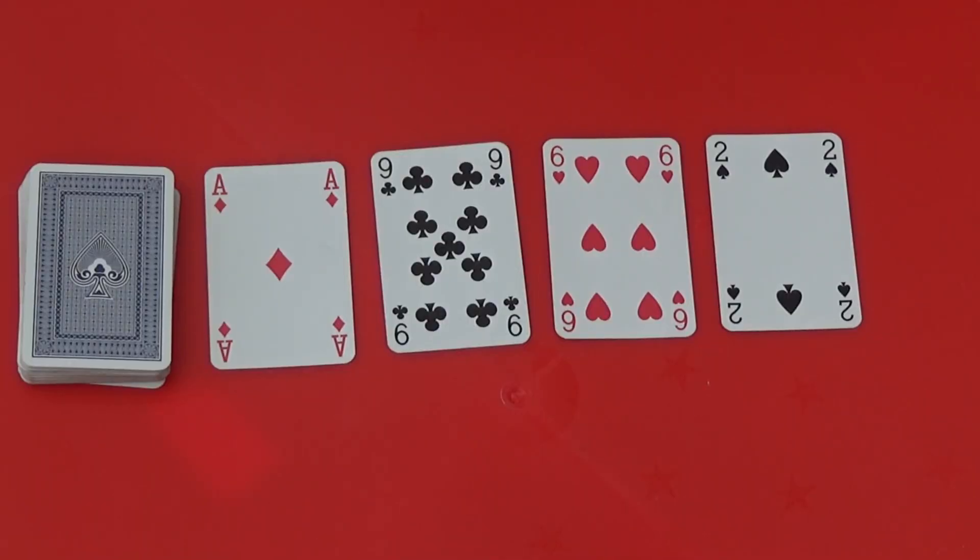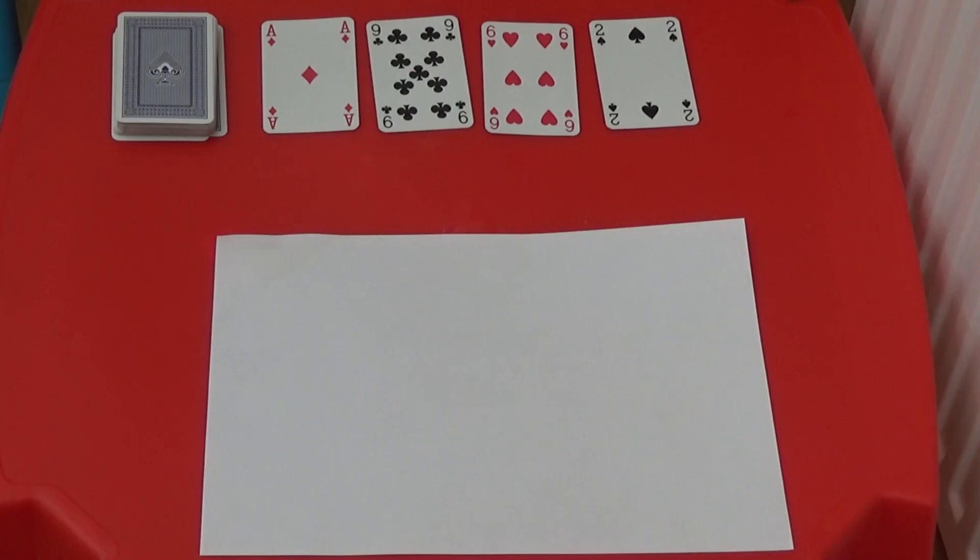If I look at my cards I can see I have a 1, a 9, a 6 and a 2. If I multiply 2 by 9, I get 18.